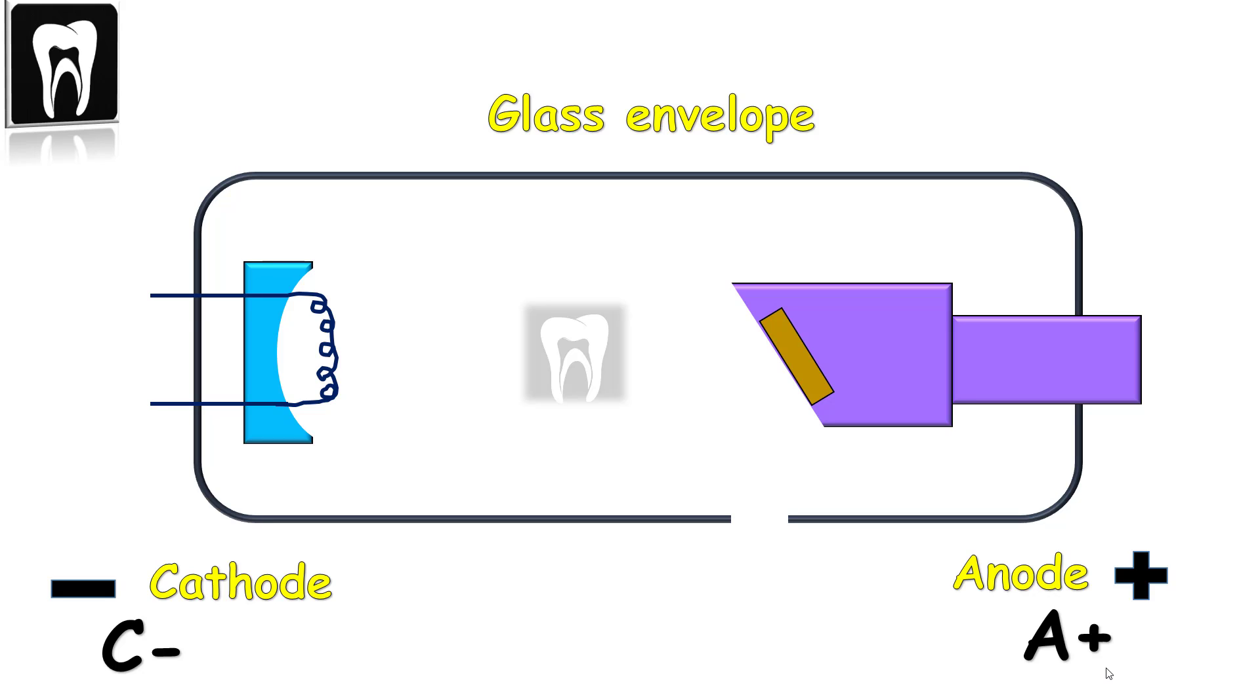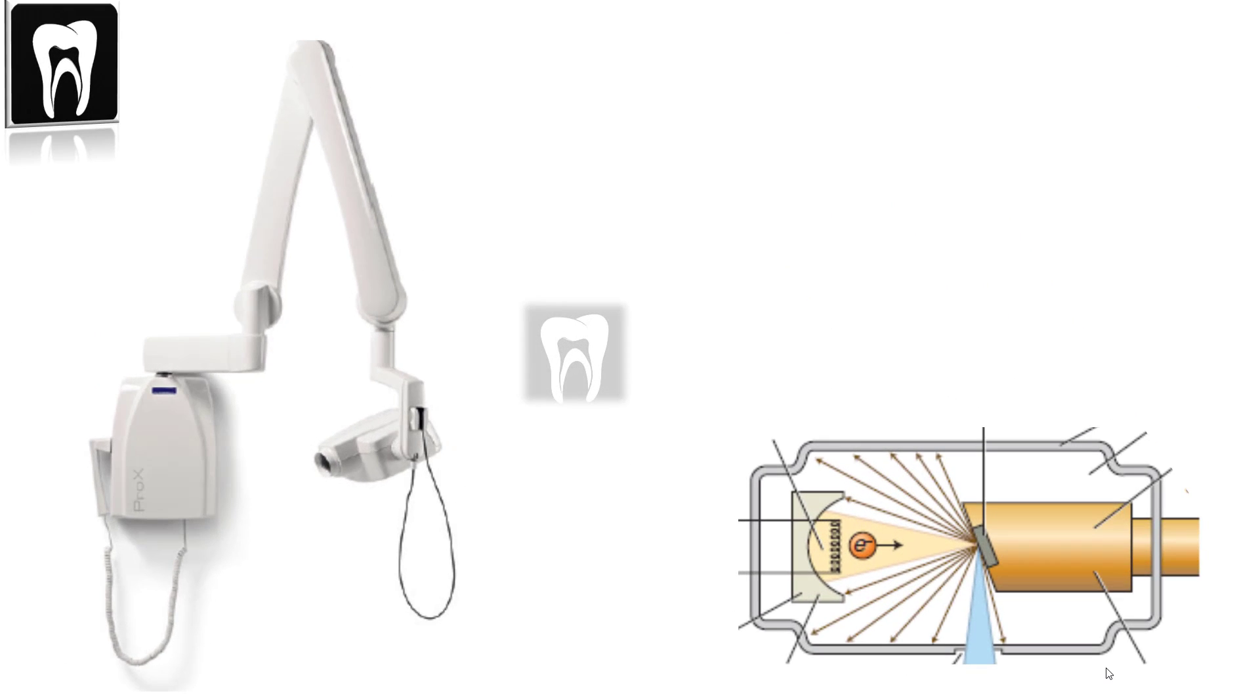They're both inside an evacuated glass tube that creates an air-free vacuum to protect the tube from oxidation. All of these parts are inside the tube housing that you actually see in radiology clinics. Let's look at all the parts and details.